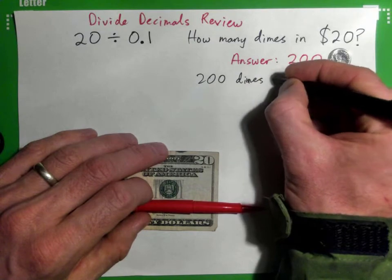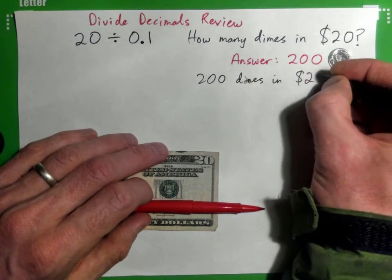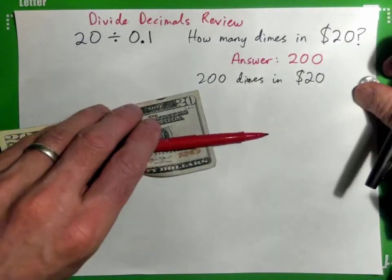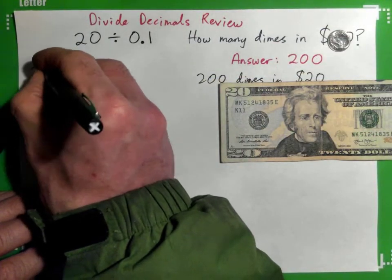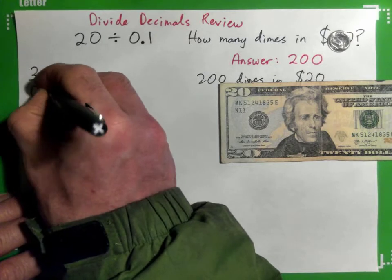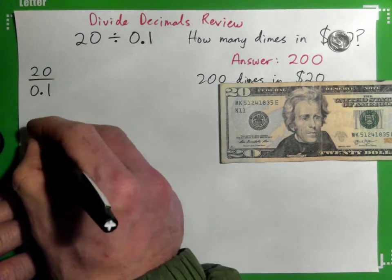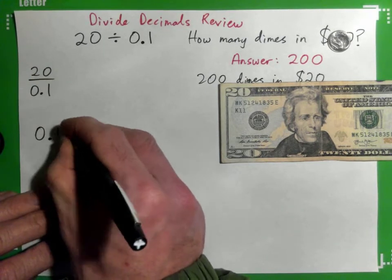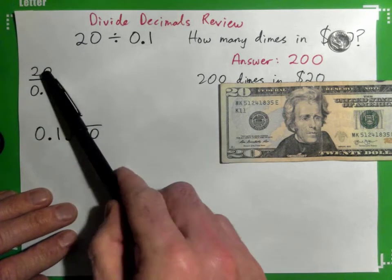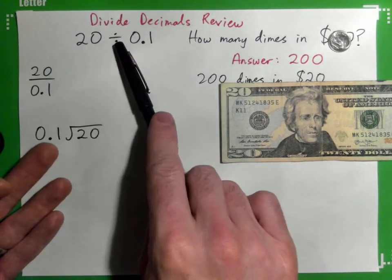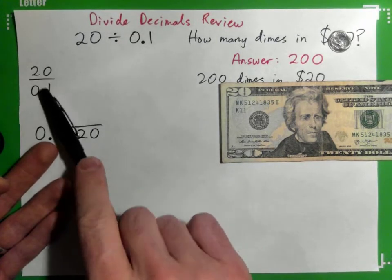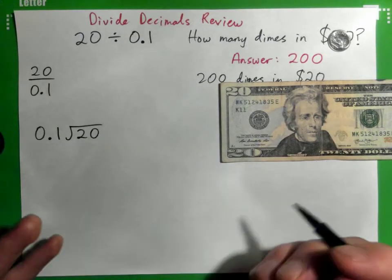Now I want you to write all different ways this could be written as 20 over 0.1. It's also 0.1 into 20. So write it this way, write it this way. There's three different ways of writing division - like this with the division sign, as a fraction, or in the long division form.